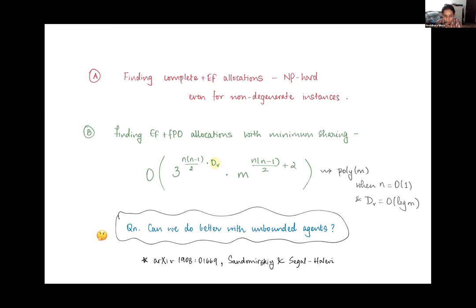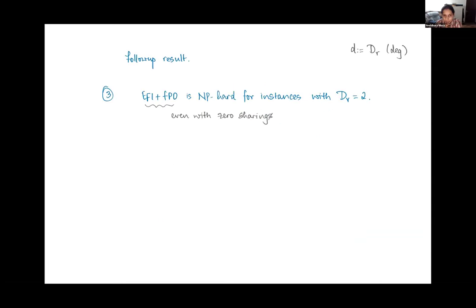The question that I'm wondering about is what happens if the number of agents is unbounded and the degeneracy is still small, can we do better? And to this end, we have some observations.